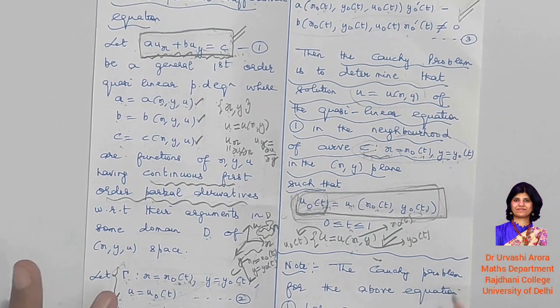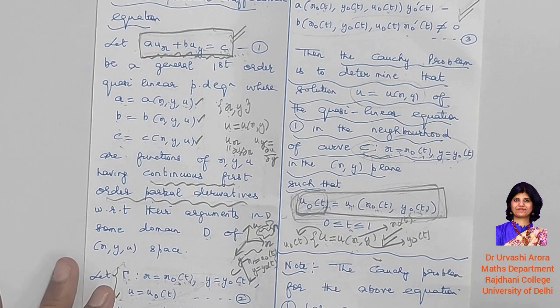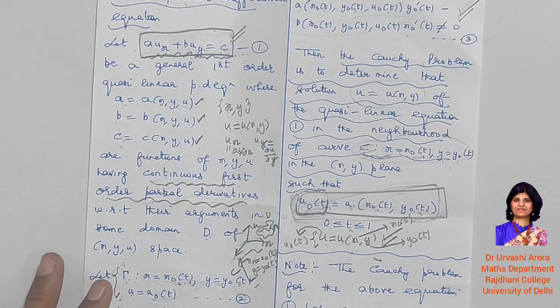So that was all about the Cauchy problem for a first-order quasi-linear partial differential equation.